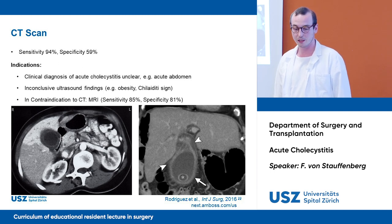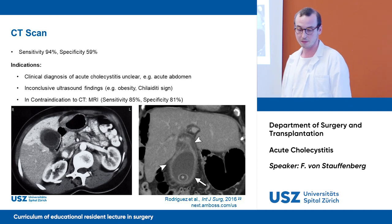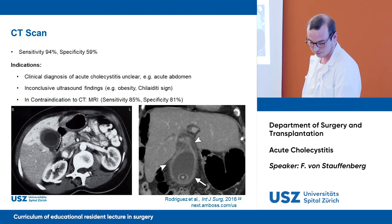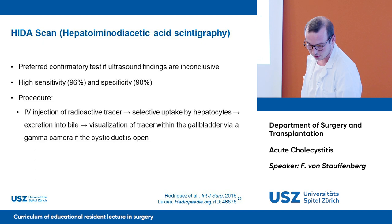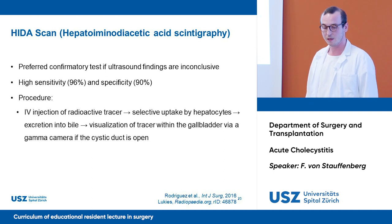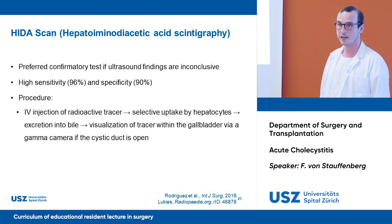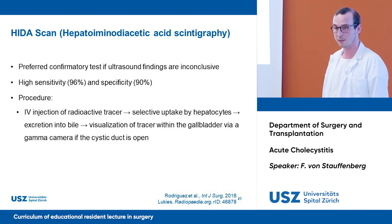In contraindication to CT, we can also use MRI, which takes longer, with a sensitivity of 85 percent and a specificity of 81 percent. A test we rarely use in this institution is the HIDA scan — the Hepato-IminoDiacetic Acid scintigraphy — which is actually the preferred confirmatory test if ultrasound findings are inconclusive. It has a very high sensitivity of 96 percent and a specificity of 90 percent.